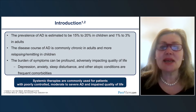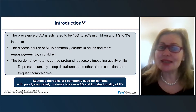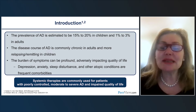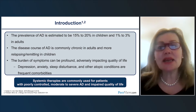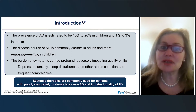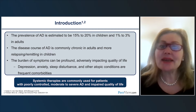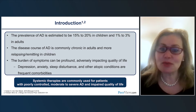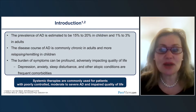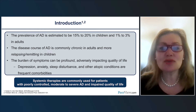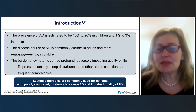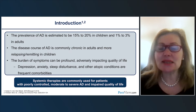Atopic dermatitis is the most common inflammatory skin disease in both adults and children. The prevalence of AD is estimated to be 15 to 20% in children and 1 to 3% in adults, although in the United States it's higher, up to 7%. The disease course is commonly chronic in adults and more relapsing-remitting in children. The burden of symptoms can be profound, really impacting quality of life, starting with intractable itch, inducing sleep disturbance, depression and anxiety, and many other comorbidities. Systemic treatments are commonly used for patients with moderate to severe atopic dermatitis not controlled with topical treatments and with impaired quality of life.